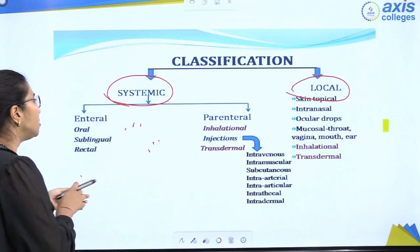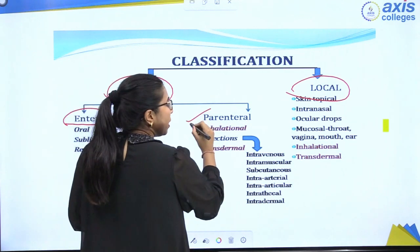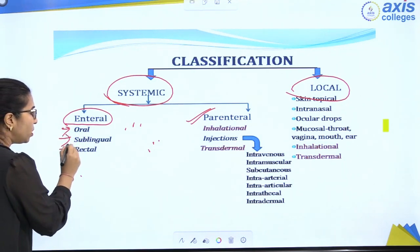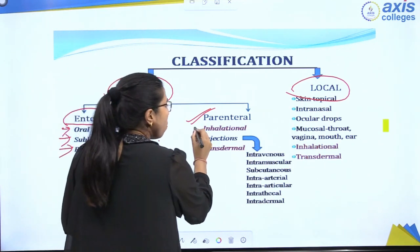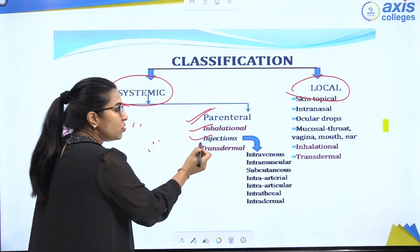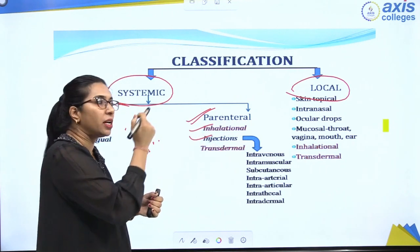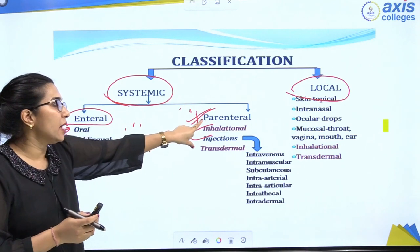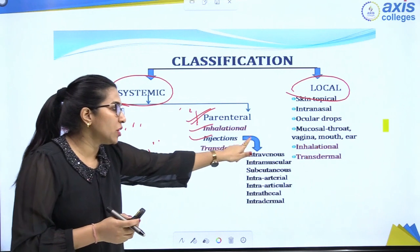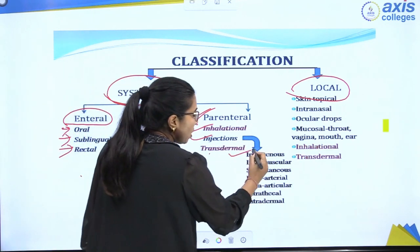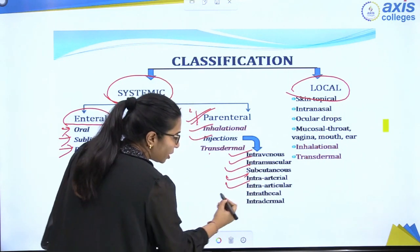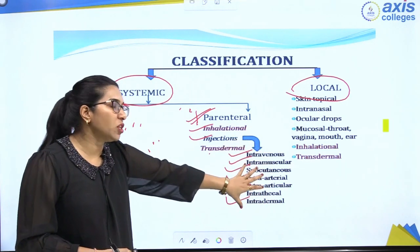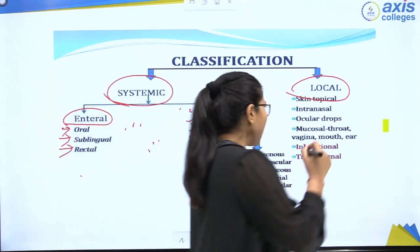Enteral consists of the oral route, sublingual route, and rectal route. Parenteral consists of inhalation, injections, and transdermal. Injections are further divided into intravenous, intramuscular, subcutaneous, intra-arterial, intraarticular, intrathecal, and intradermal. Transdermal is part of both parenteral and local routes. The local route includes skin, intranasal, ocular, mucosal, vaginal, ear, inhalation, and transdermal.